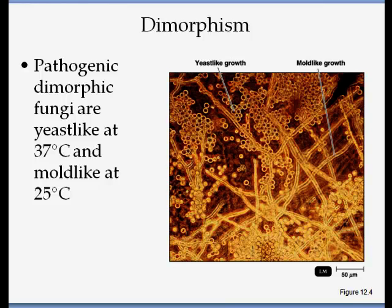Pathogenic fungi can grow at two different temperatures, which is another proof of dimorphism. Yeast will grow at 37 degrees Celsius, which is body temperature, while mold will grow at a lower temperature. That is another proof of dimorphism.